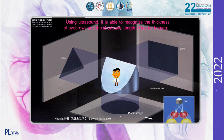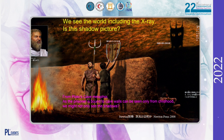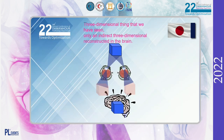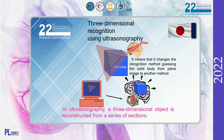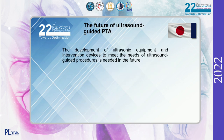Using ultrasound, it is possible to visualize the thickness of structures and spatial relationships of a human body. We see the world as a three-dimensional structure. In the first place, humans recognize a three-dimensional object by imaging a 3D object from the two-dimensional image reflected onto the retina. In ultrasonography, a 3D object is reconstructed from a series of cross-sectional images. This means that the recognition result changes when guessing the solid body from one frame image to another. The future of ultrasound-guided PTA will require development of ultrasonic equipment and interventional devices that meet the needs of ultrasound-guided procedures.